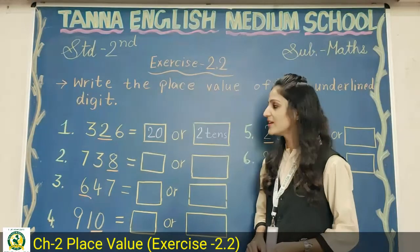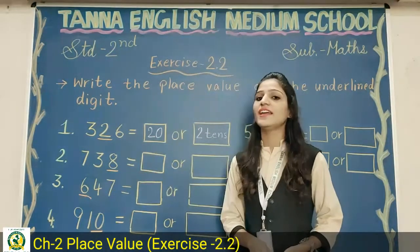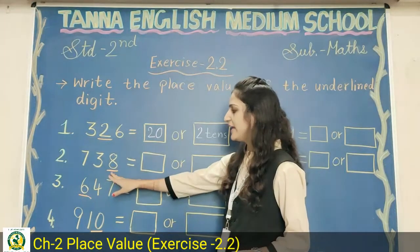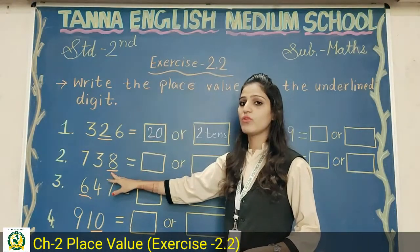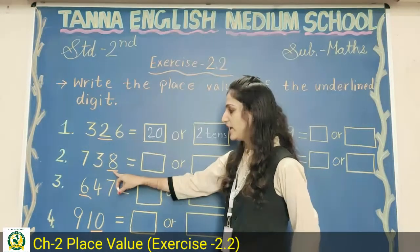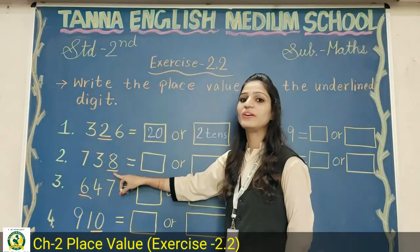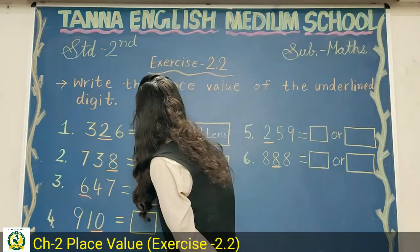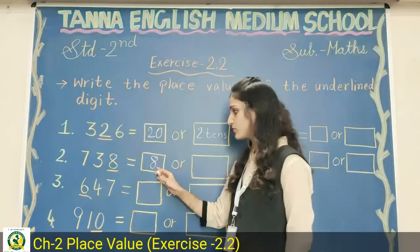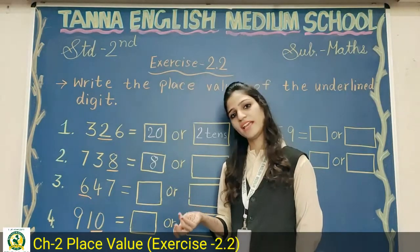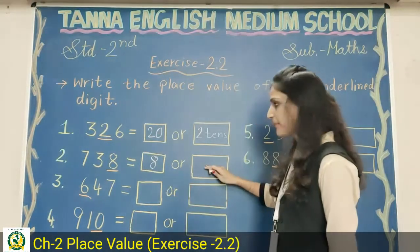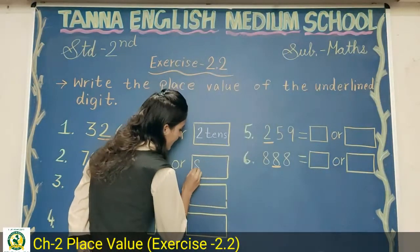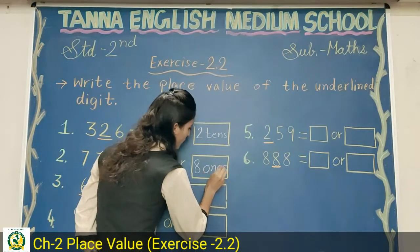Next, number two: seven hundred and thirty eight. Eight has an underline. You have to write the place value of eight. Eight is at ones place. In the first box, write just eight — no zeros after it, because eight ones means eight. And in the second box, write 'eight ones.'